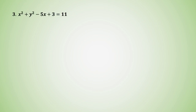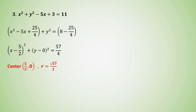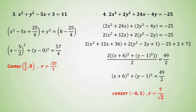For the third example, x squared plus y squared minus 5x plus 3 equals 11. You may pause the video to try to get the answer. The center is 5 over 2 comma 0 and the radius is the square root of 57 over 2. For the fourth example, 2x squared plus 2y squared plus 24x minus 4y equals negative 25. Again, you may pause if you want to try. The center of the circle is at negative 6 comma 1 and the radius equals 7 over the square root of 2.